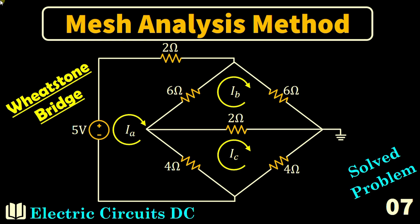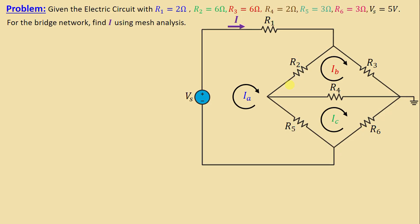Greetings, welcome to this new video about mesh analysis method. We'll solve problem number seven. Given the electric circuit with R1 and R4 equal to 2 ohms, R2 and R3 equal to 6 ohms, and R5 and R6 equal to 3 ohms, and a voltage source Vs equal to 5 volts. The question: for the bridge network, find the current I using mesh analysis, where I is the current through resistor R1.